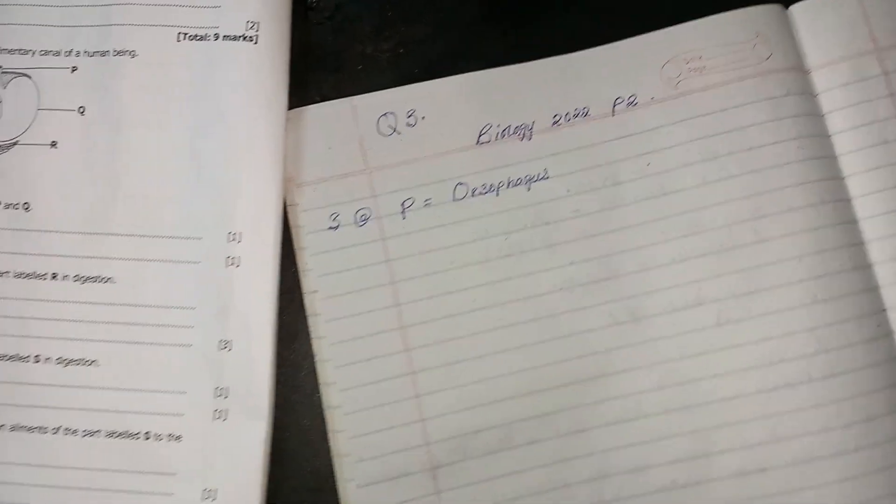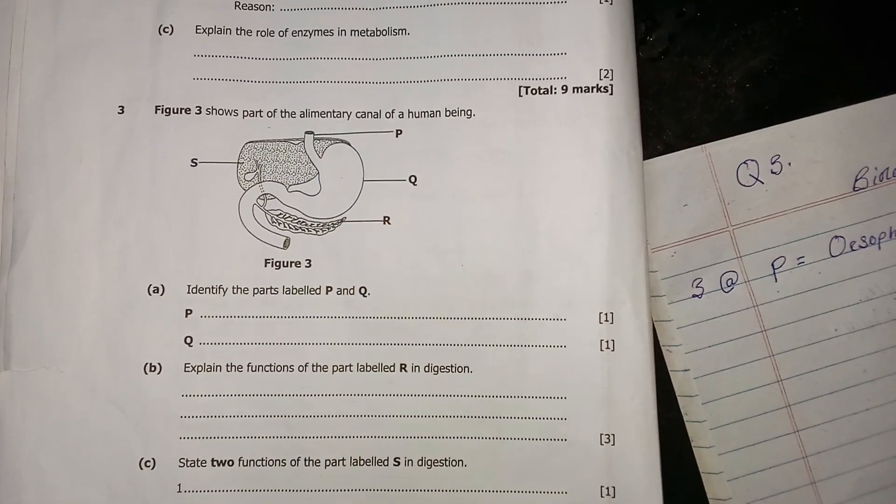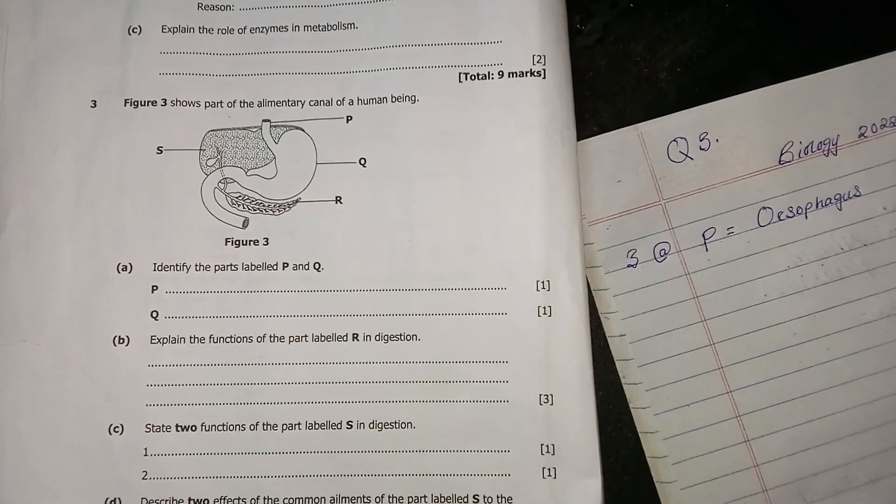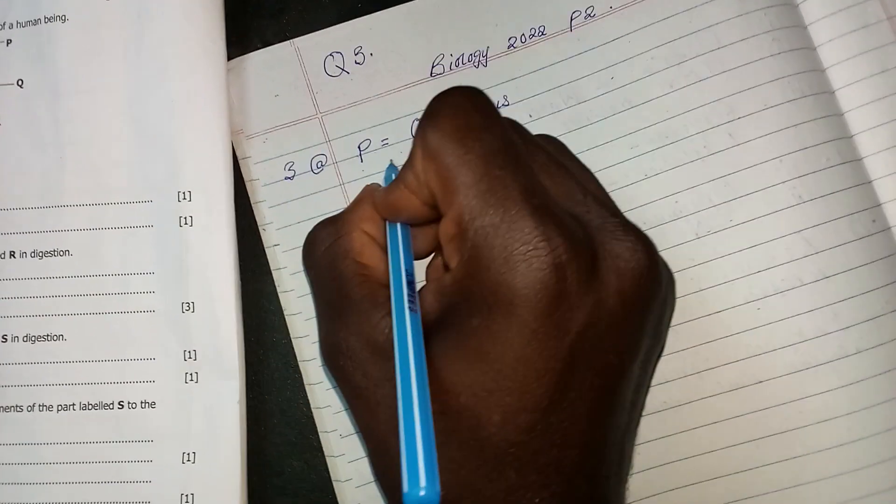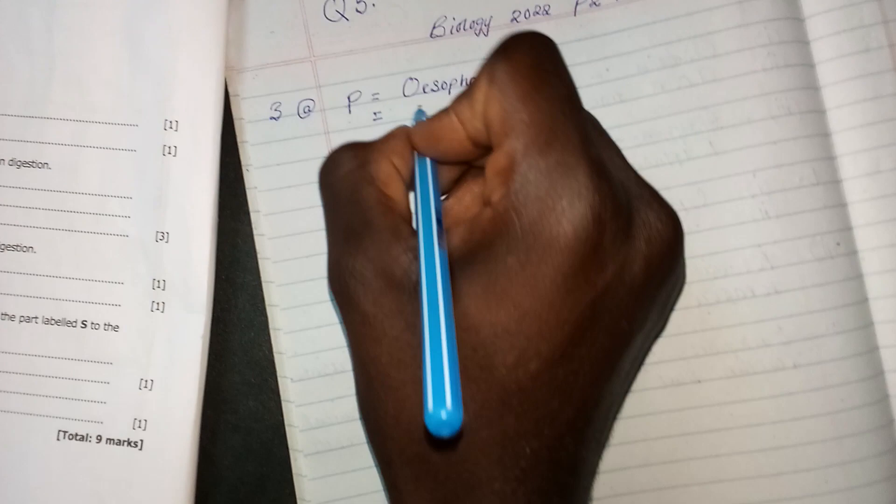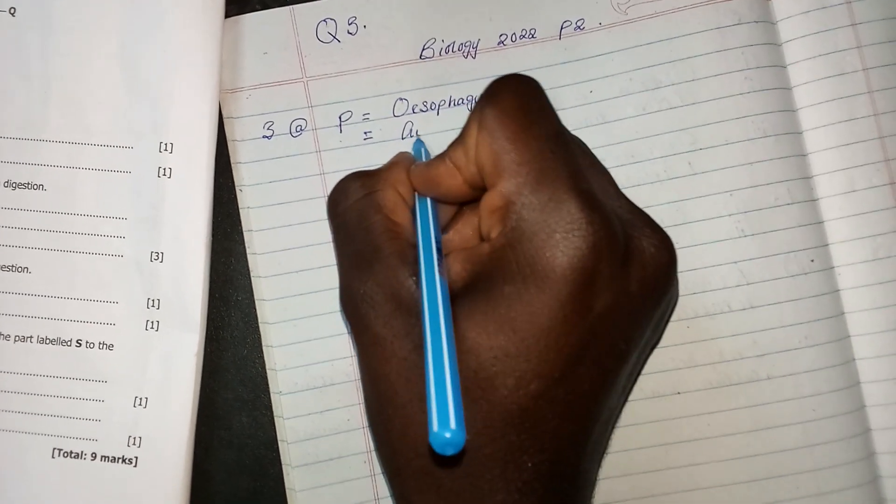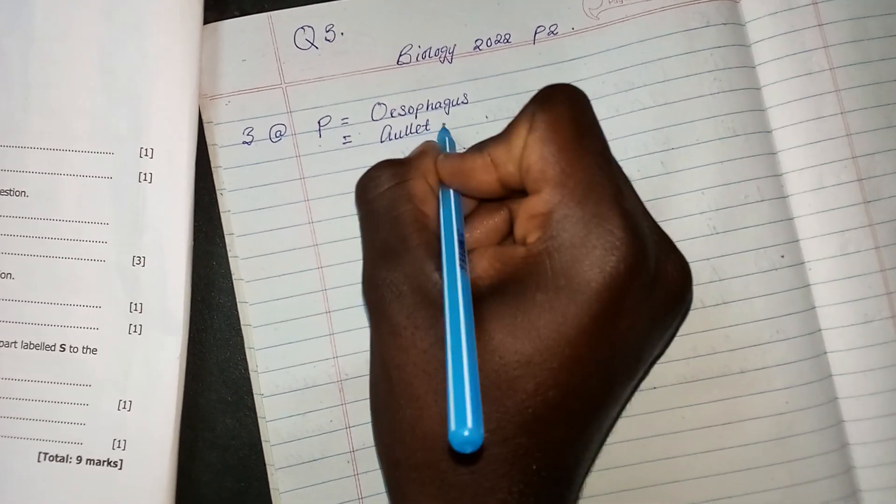Or you can also call the part labeled P as the gullet. This is just the other name of esophagus.